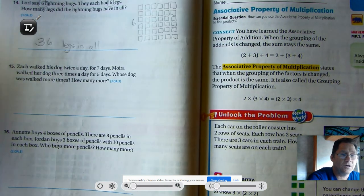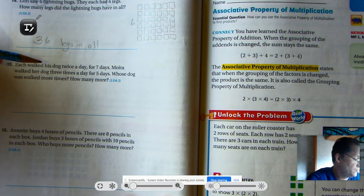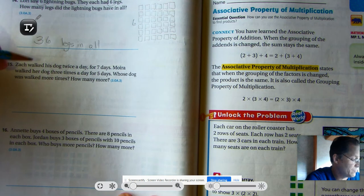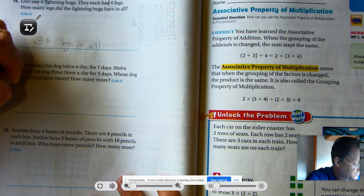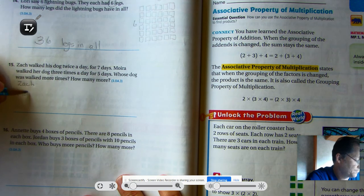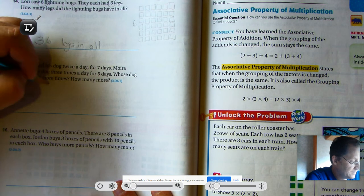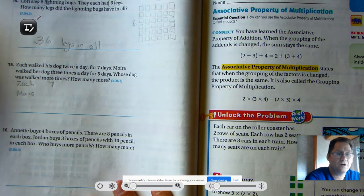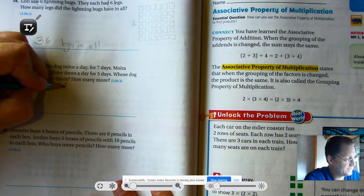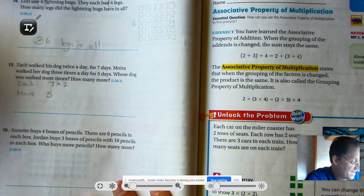Zach walked his dog twice a day for seven days. Moira walked her dog three times a day for five days. Whose dog was walked more times? How many more? So we have a comparison problem here. We have Zach and Moira. Zach walked his dog twice a day for seven days. So seven days would be our groups. And he walked his dog twice a day for those seven days. Moira walked her dog five days, but three times each of those days.